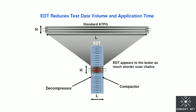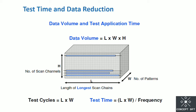Many factors depend on scan chain length, which we will see now. In this slide, H means number of scan chains, L means longest scan chain length, and W means number of patterns provided to the scan chain. The first formula is data volume: Data Volume = L × W × x. Here L plays a very important role. The next formula is test cycle: Test Cycle = L × W.